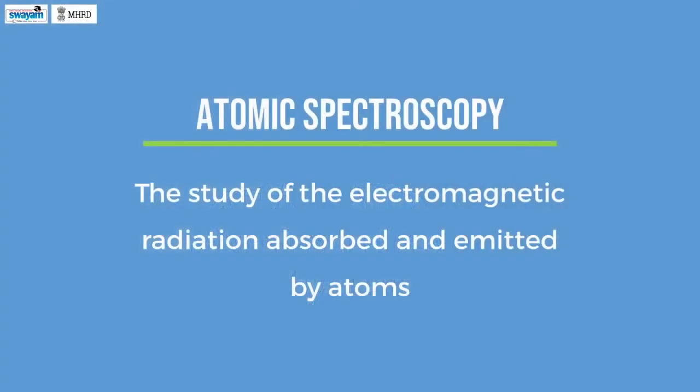Atomic spectroscopy is the study of electromagnetic radiation absorbed and emitted by atoms. Since each atom has its own unique light absorption and emission characteristics, we can exploit this information to analyze the composition of elements in a given sample. Electrons are in certain energy levels in atoms, which we call atomic orbitals. As per quantum mechanics, these energy levels are said to be quantized, meaning each energy level possesses a specific energy rather than any arbitrary energy.